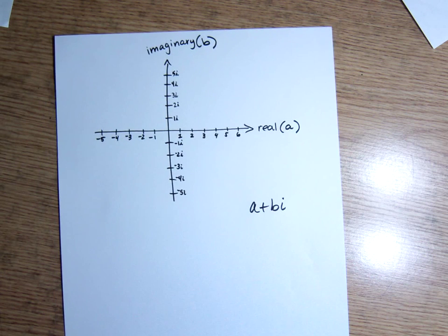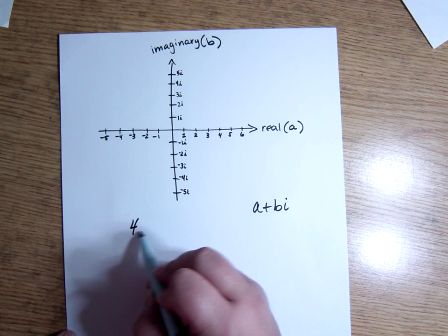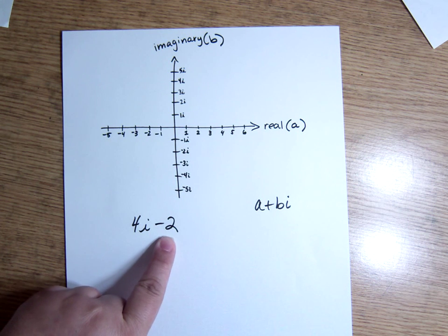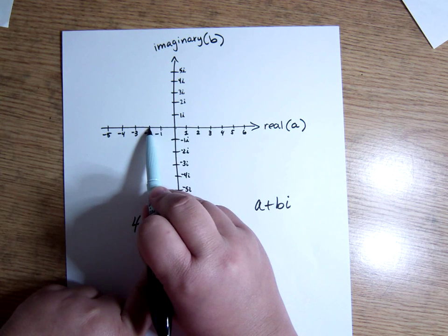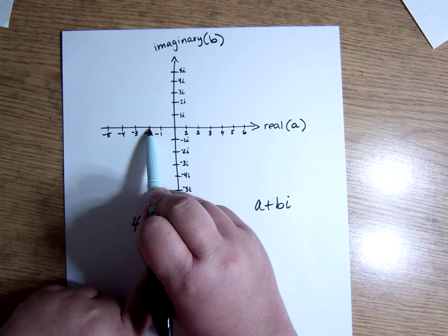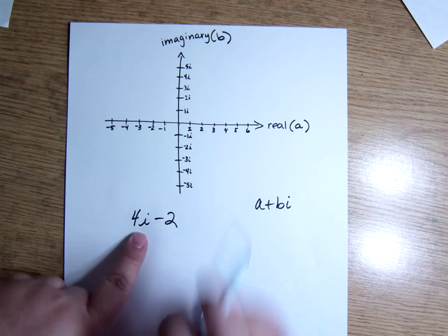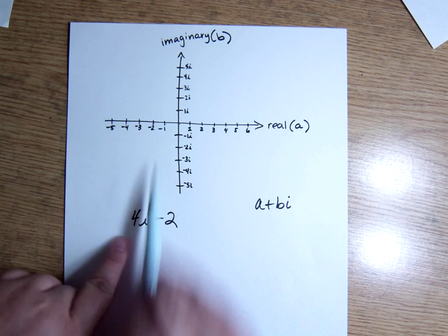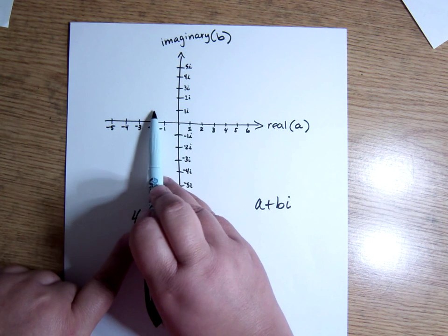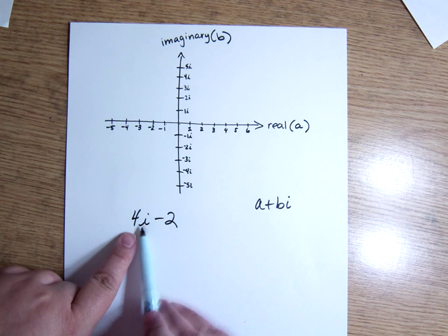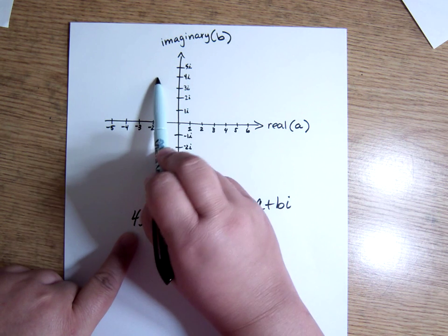So, for instance, 4i minus 2. The real part is the negative 2. So I go over to negative 2 on the real number line. The imaginary part is the 4. So that's where I go up. Positive 4, so I go up. If it was negative 4, I'd go down. So the negative 2 sends me left 2. This sends me up 4. So left 2, up 4. Here it is.